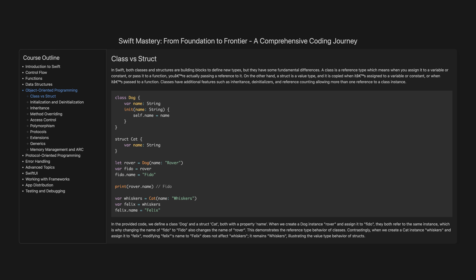Classes have additional features such as inheritance, de-initialisers, and reference counting, allowing more than one reference to a class instance. In the provided code, we define a class Dog and a struct Cat, both with a property name. When we create a Dog instance Rover and assign it to Fido, they both refer to the same instance, which is why changing the name of Fido also changes the name of Rover — demonstrating the reference type behaviour of classes. Contrastingly, when we create a Cat instance Whiskers and assign it to Felix, modifying Felix's name does not affect Whiskers, illustrating the value type behaviour of structs.